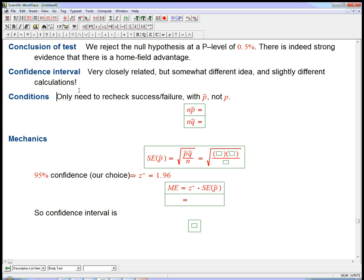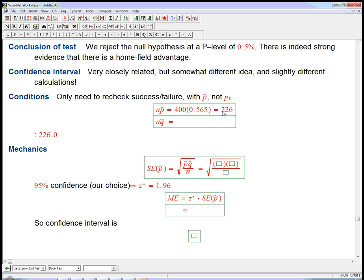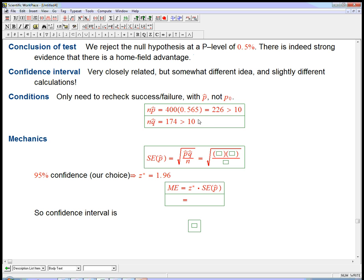One of the nice things is you don't have to recheck all the conditions. The qualitative conditions are the same. The success/failure condition is the only thing that really needs to be rechecked, and it's unlikely to give a different answer. Technically we're not running with that old p value, not p₀ anymore. So we go with np̂, that's 400 times 0.565, which is 226. And nq̂ is 174. These are both way bigger than 10.